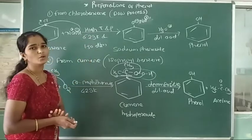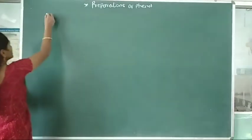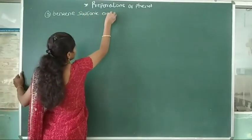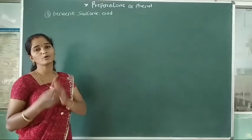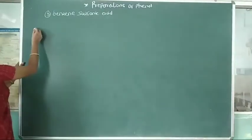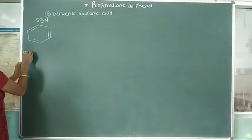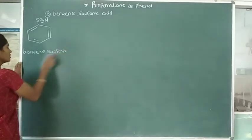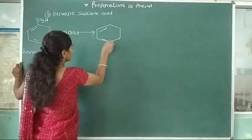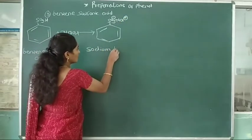The third method: phenol is prepared from benzene sulfonic acid. In this method, benzene sulfonic acid is neutralized with sodium hydroxide to form sodium benzene sulfonate (SO₃⁻Na⁺). The sulfonic acid group attached to the benzene ring reacts with NaOH to give sodium benzene sulfonate.